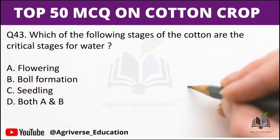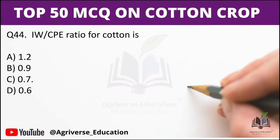Next question: Which stages of cotton are critical for water? In the case of cotton, flowering and boll formation stages are both critical stages for water requirement. Additionally, the IW/CPE ratio for cotton is 0.7, compared to rice, wheat, and maize.